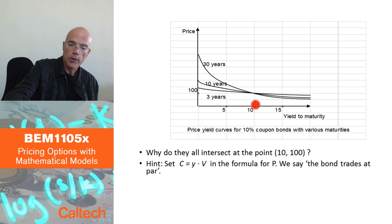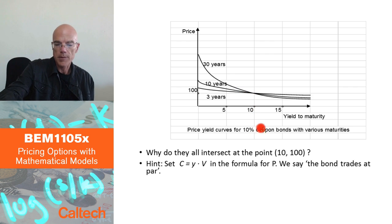The yield may move to something else tomorrow, but if the yield today is 10%, the price should be 100 for a 10% coupon bond. You can also check that mathematically if you use the formula for the yield or for the price. You can check that if the coupon is exactly equal to the yield, you get the face value as the price of the bond.